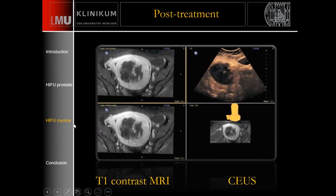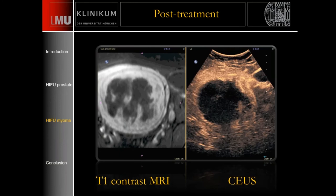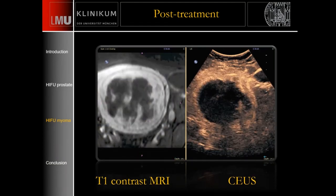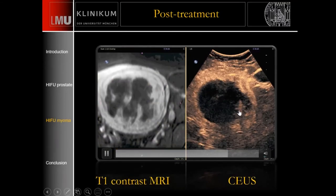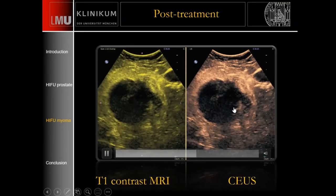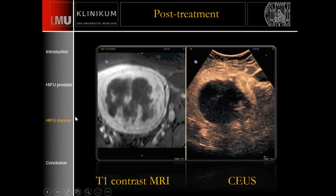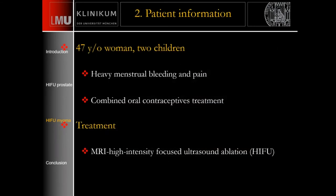Checking the border and perfusion: there is a little bit of perfusion, but overall successful treatment with a large necrosis of the myoma of the uterus. The second myoma patient is a 47-year-old woman with two children who also has pain, and we made the decision that she should undergo HIFU therapy.